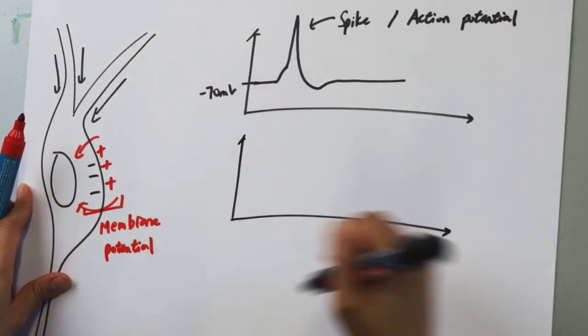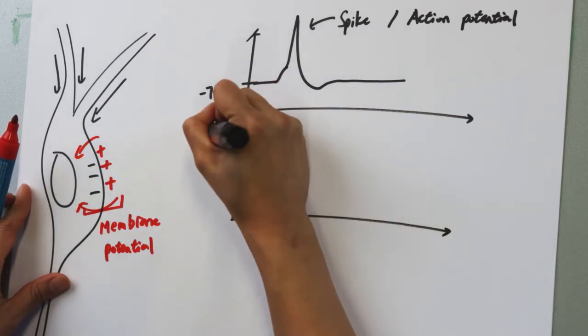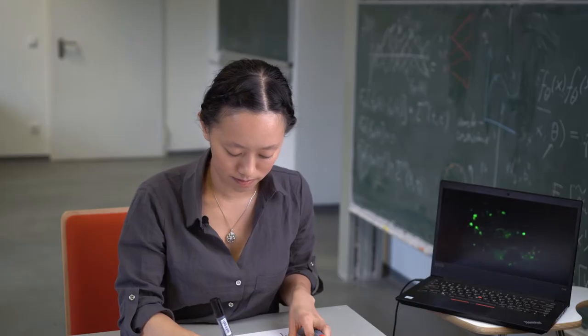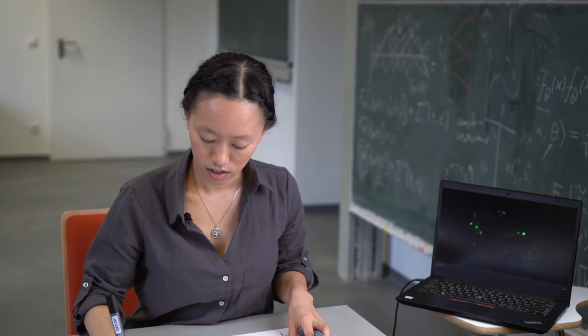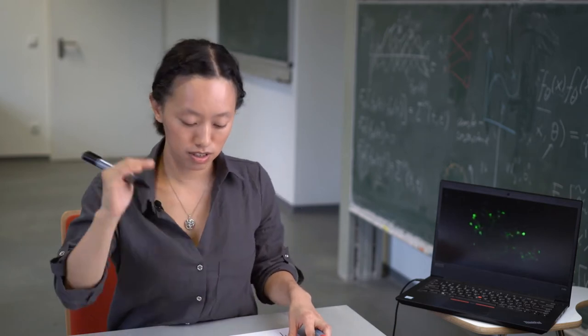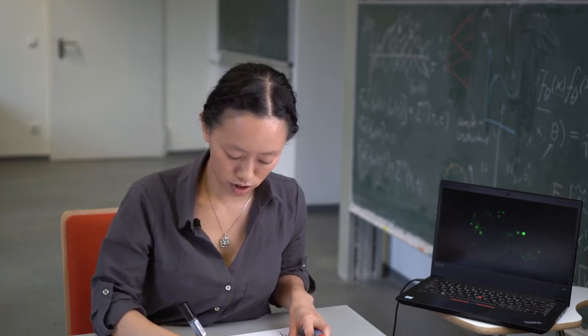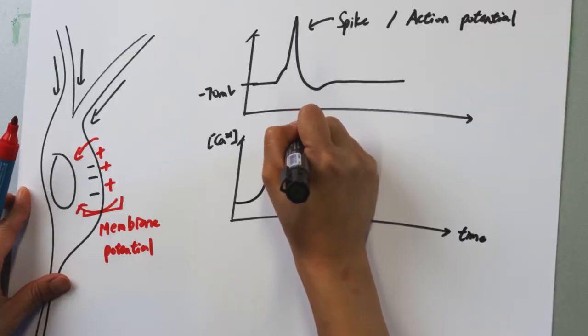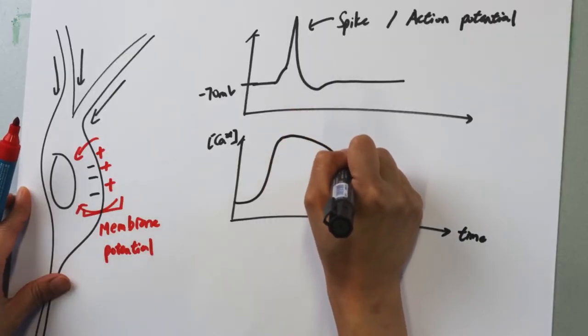Now, imagine that you are measuring the calcium ion concentration inside the neuron. When the membrane potential increases, the calcium ion concentration also increases and drops down fairly slowly.